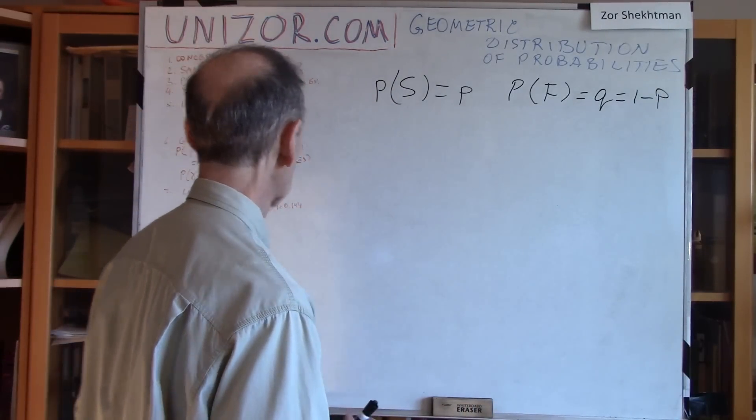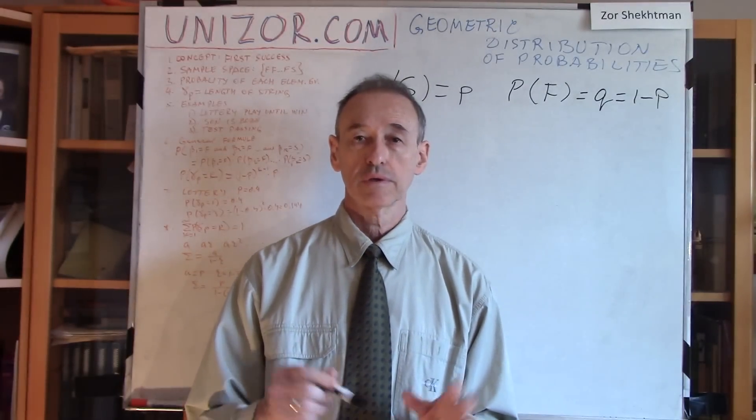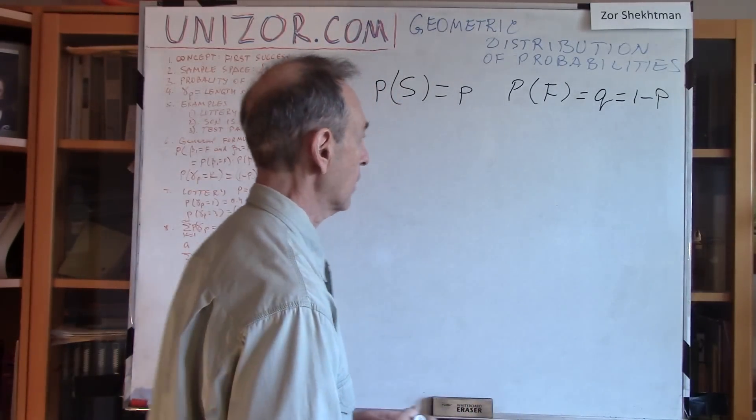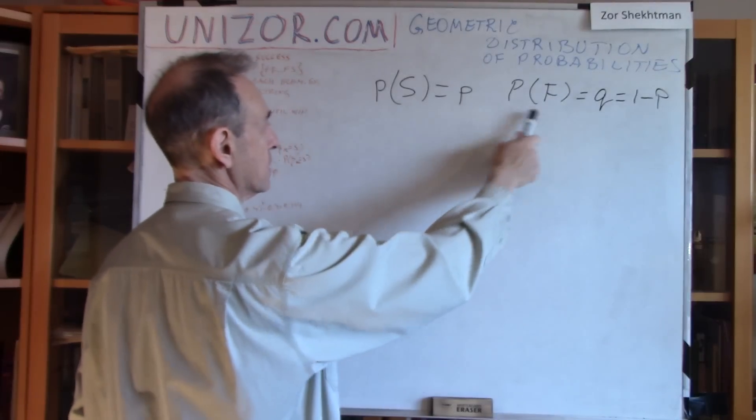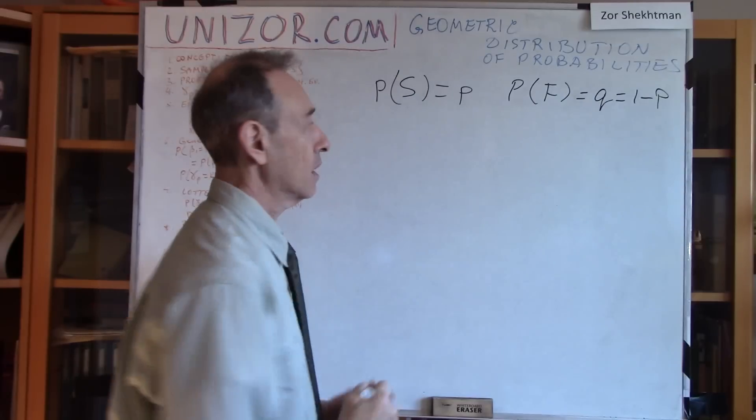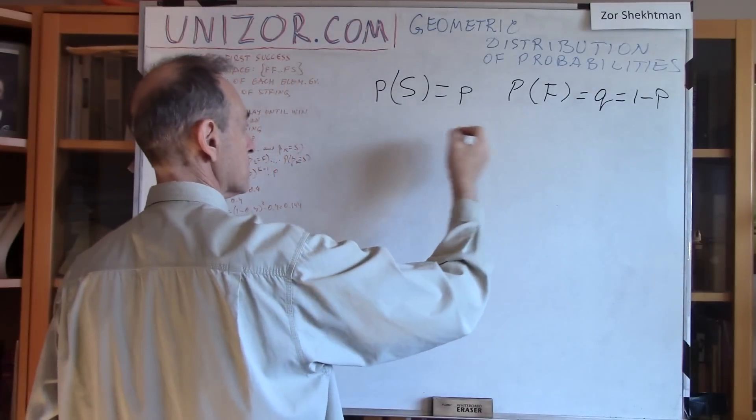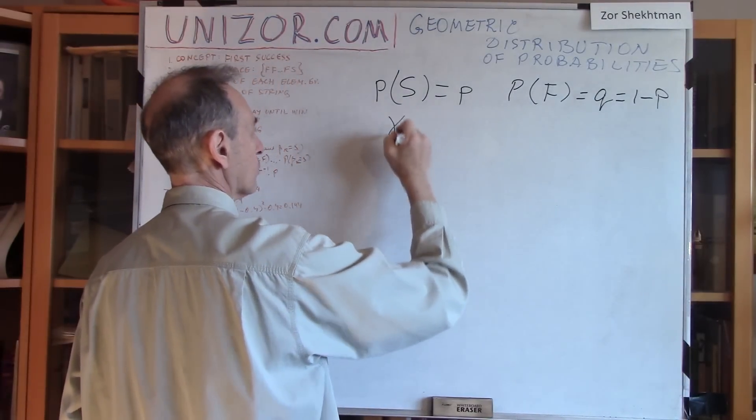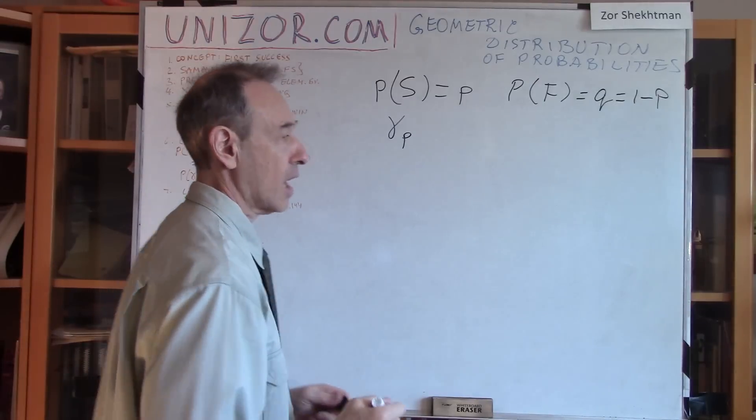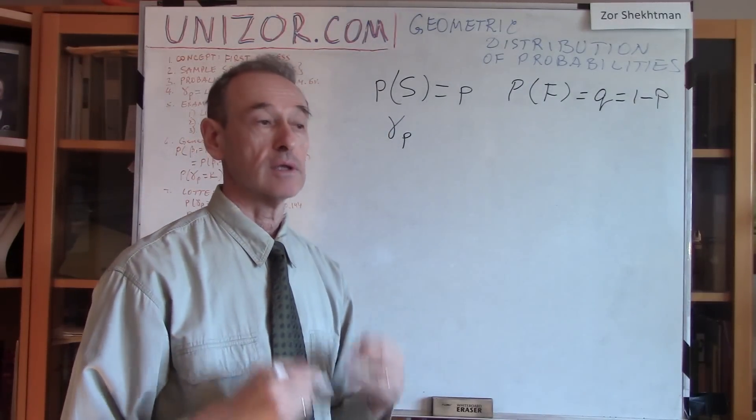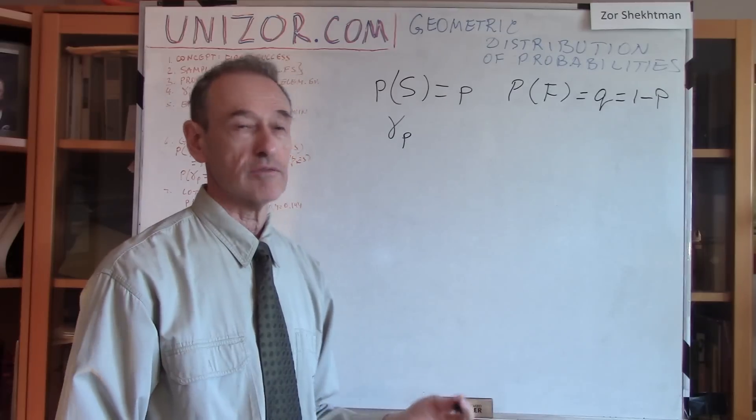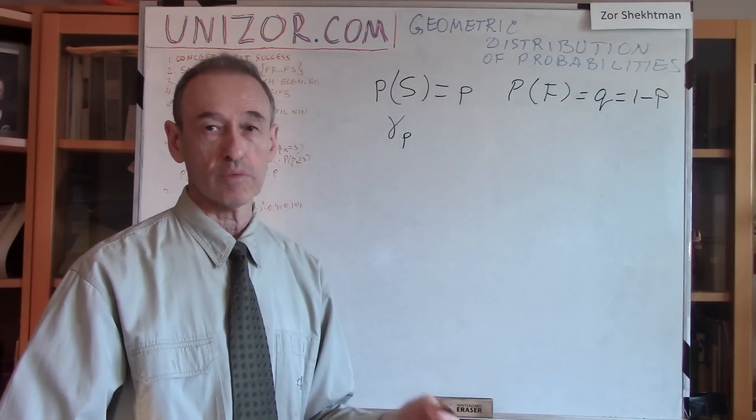So he might have certain number of failures in the beginning, and then there will be a success. So that's also an example of this particular geometric distribution. Alright, so let's talk about concrete mathematics right now. We have this case, the probability of success is P, and probability of failure is Q, which is 1 minus P. And we are talking about random variable gamma with an index P, which signifies the probability. And we know it can take values 1, 2, 3, 4, whatever.